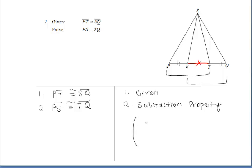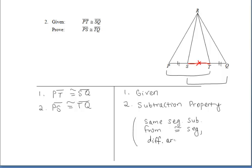You do not have to write this, but let's put into words what happened. This time we subtracted the same segment — the red one — from the already congruent larger segments. So if you subtract the same segment from congruent segments, then their differences are congruent.